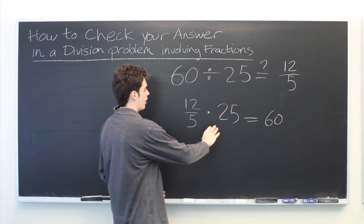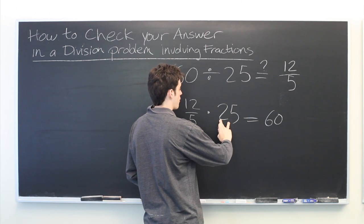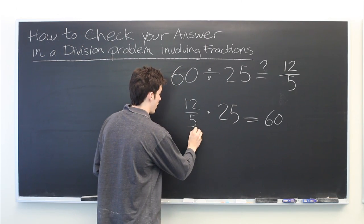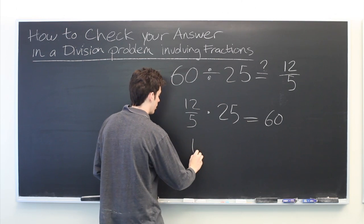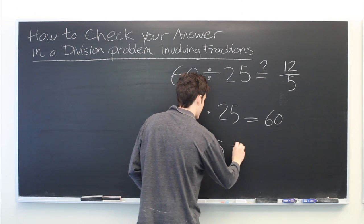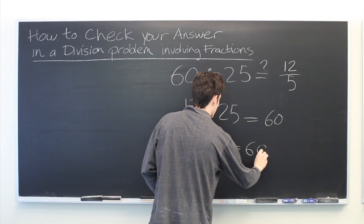Well let's see here. This is 5 times 5. So one of those will cancel with this 5 on the denominator. So what we'll end up with is 12 times 5 is equal to 60.